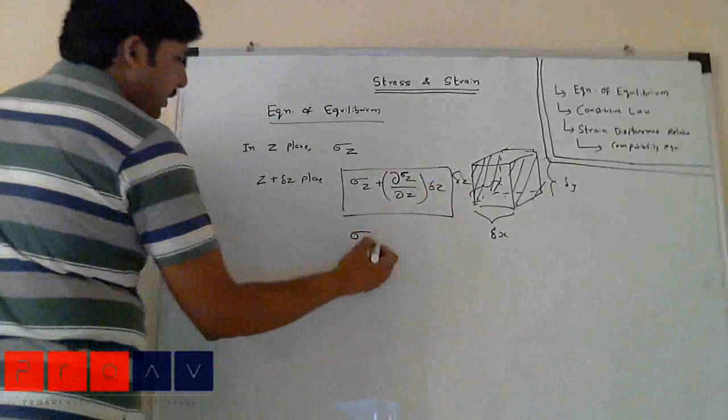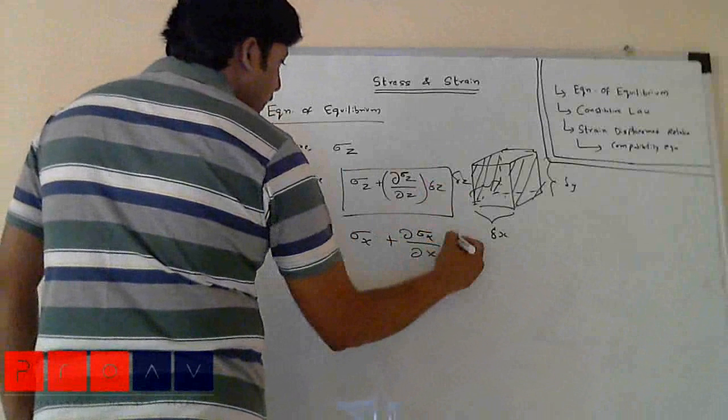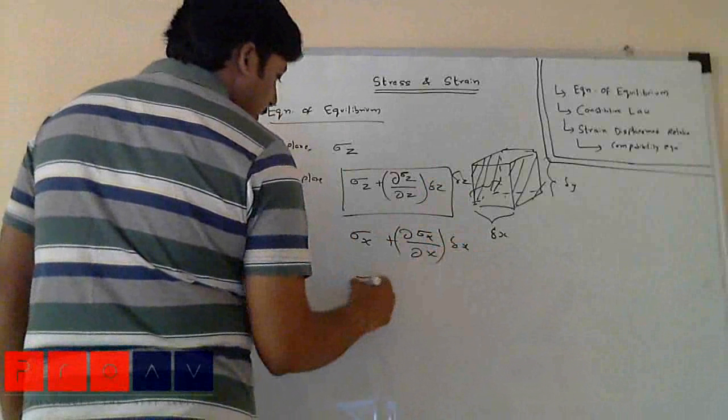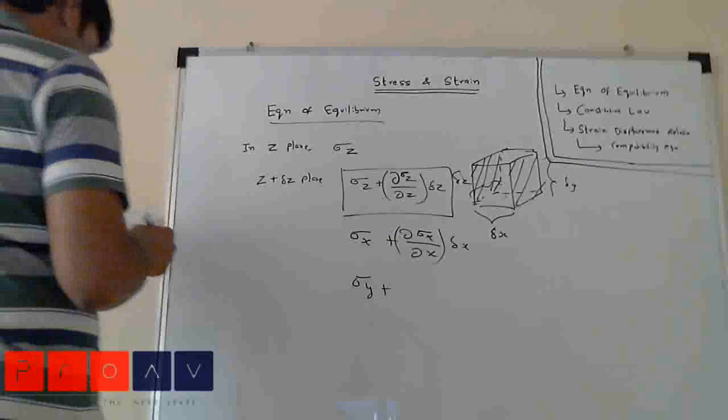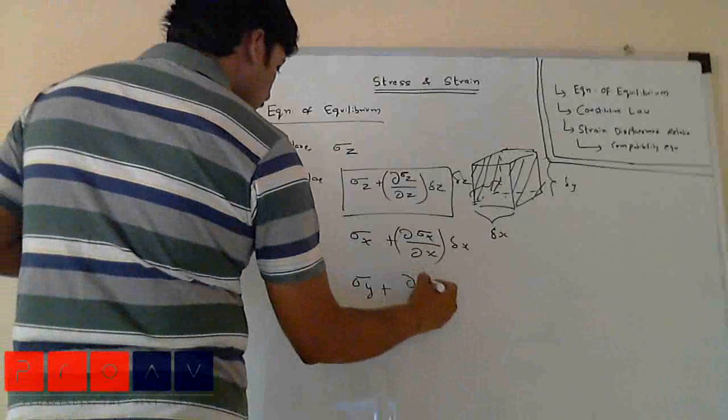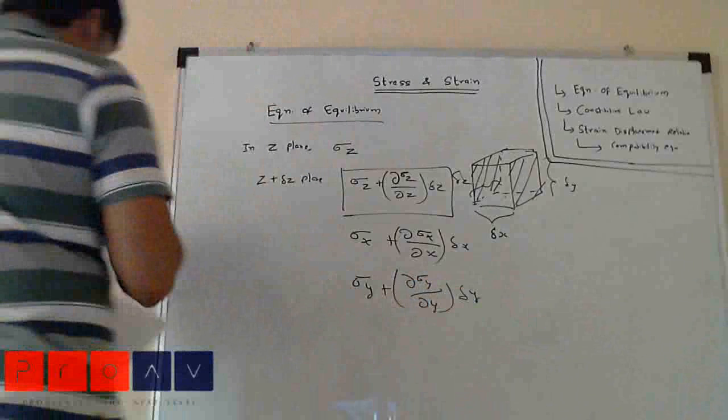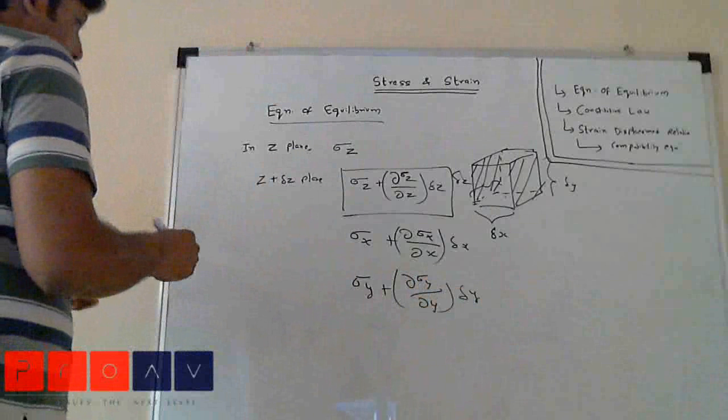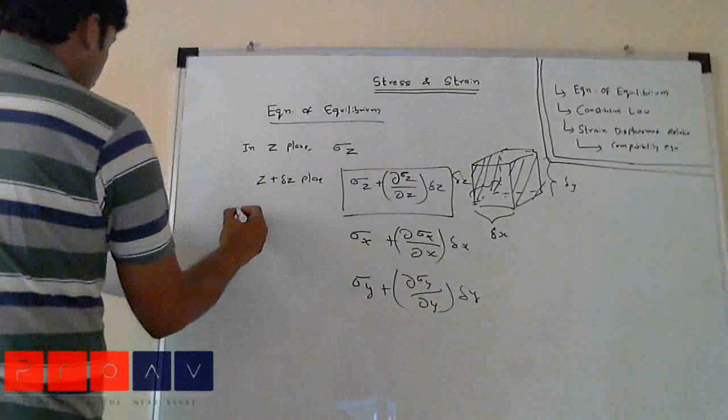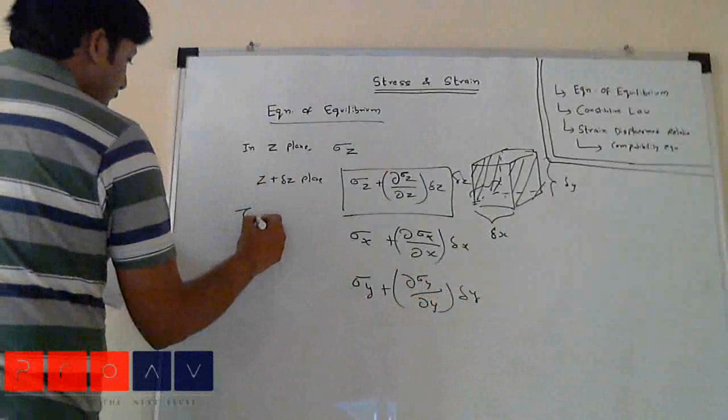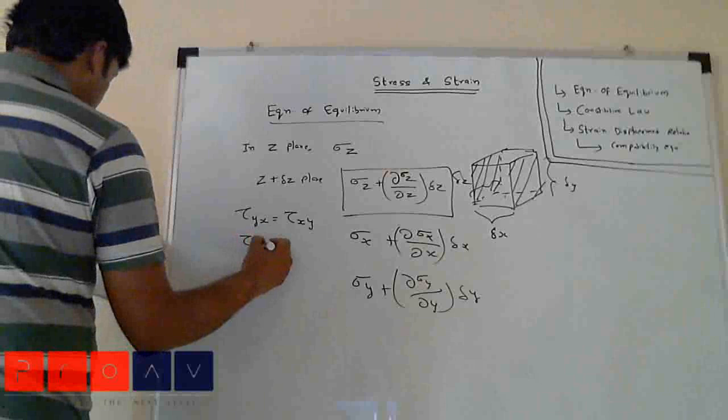Similarly for x it is sigma x plus d sigma x by dx times delta x, and for y as well.